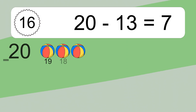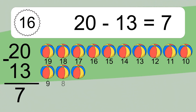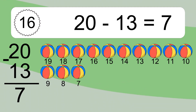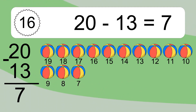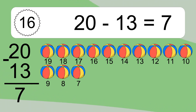20 minus 13 equals what? 20 minus 13 equals 7. Let's count it: 19, 18, 17, 16, 15, 14, 13, 12, 11, 10, 9, 8, 7.